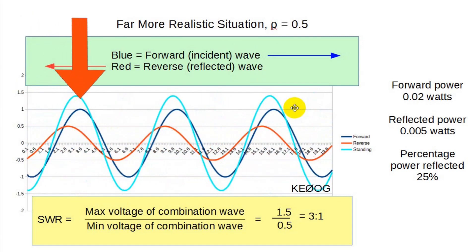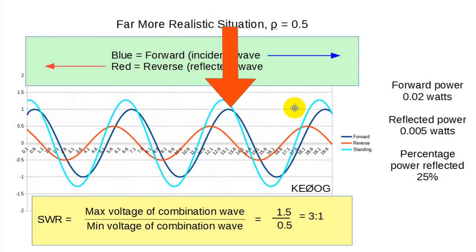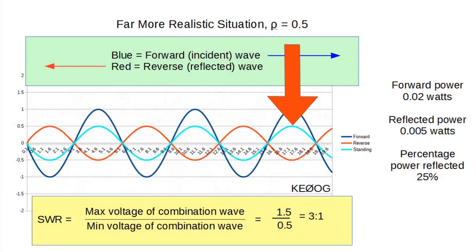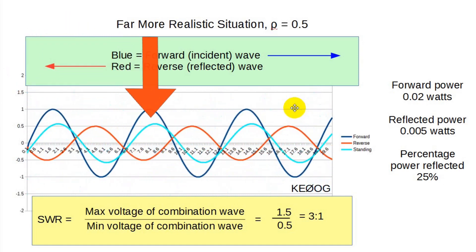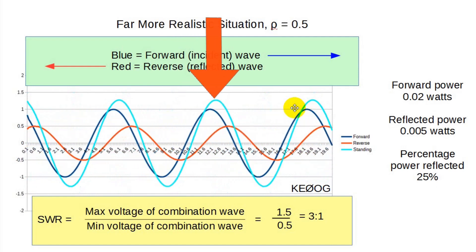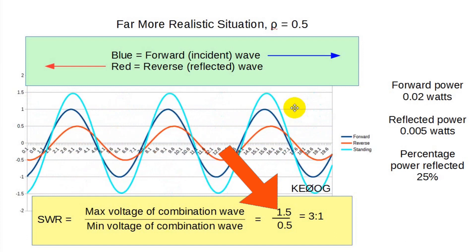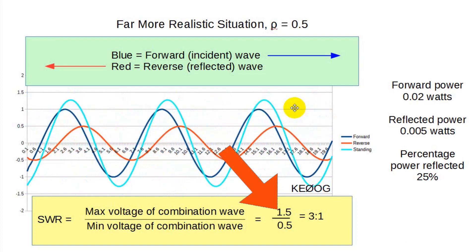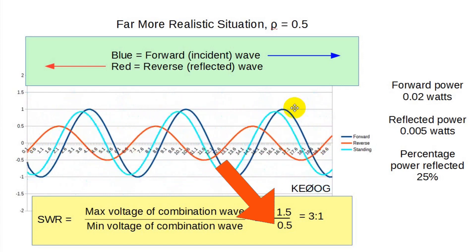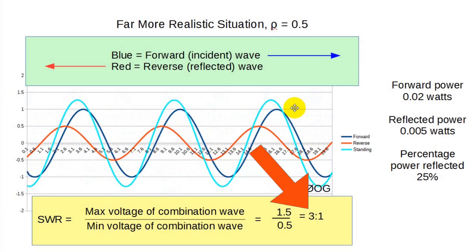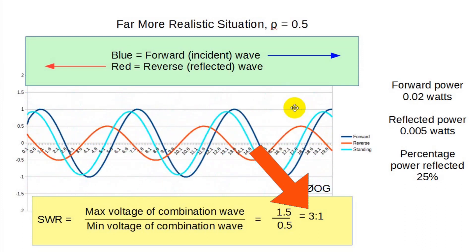The cyan, or light blue waveform, is the instantaneous sum of the incident and reflected waveforms. Let's study this. Note that since actual power is being transferred, the sum wave isn't actually standing anymore, but we still call it that. The sum waveform's highest peak is 1.5 volts, but its lowest peak value is at 0.5 volts.